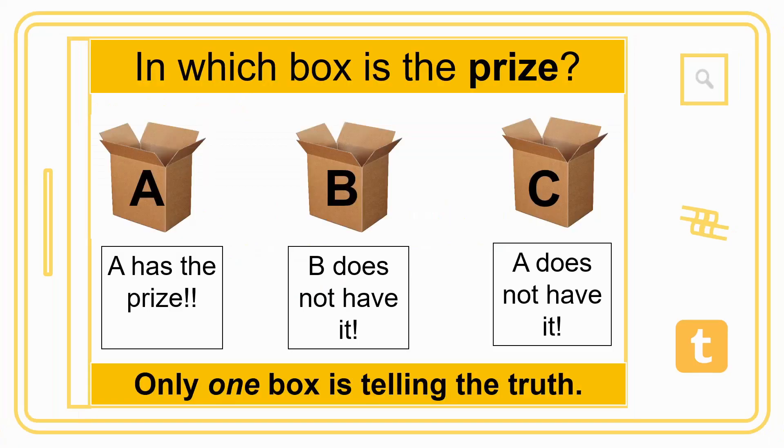So the question that we started with in lesson one was this: in which box is the prize? You have three boxes, A, B, and C. Only one box is telling the truth, and that's the key bit of information. You can see that three different boxes are saying different things, but only one box is telling the truth.